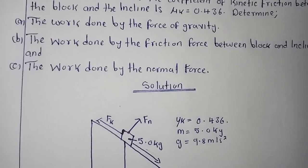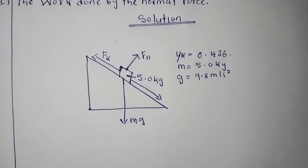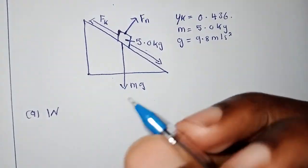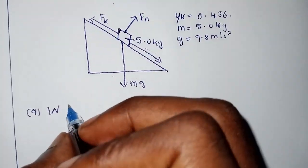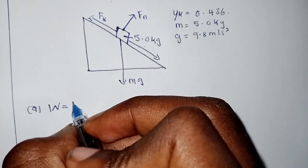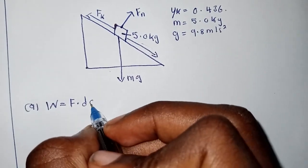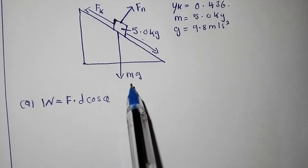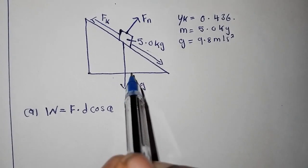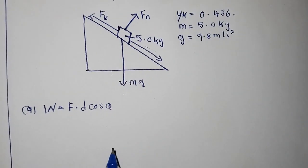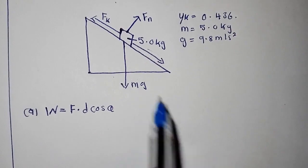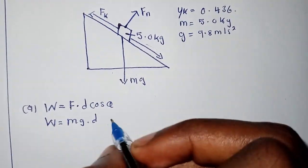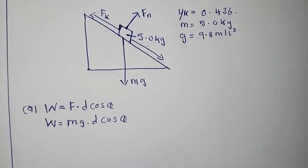The question asks us to calculate the work done by the force of gravity. We know that work done is always equal to force multiplied by distance times the cosine of the angle theta: W = F·d·cosθ. For the work done by gravity, we replace force with mg. Gravity is acting downward on the box.